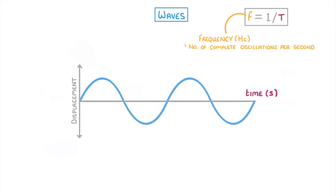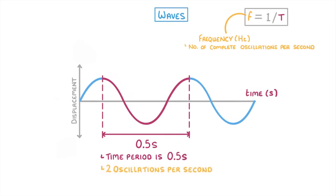To see how it works, imagine that each oscillation takes 0.5 seconds. Or in other words, the time period is 0.5 seconds. This means that there must be a total of two oscillations per second. So the frequency is 2, which is what we'd get if we did 1 divided by the time period of 0.5.